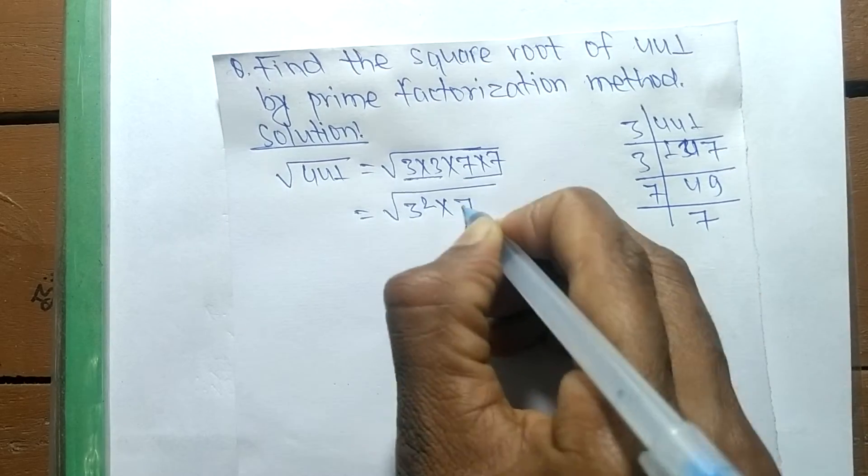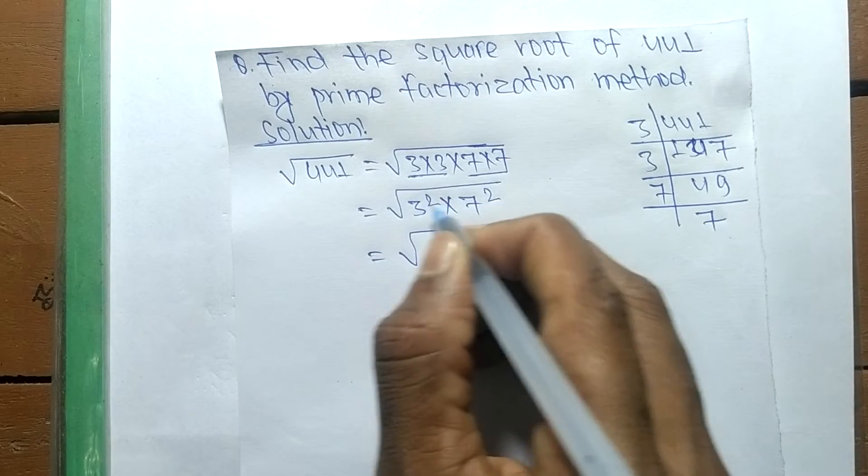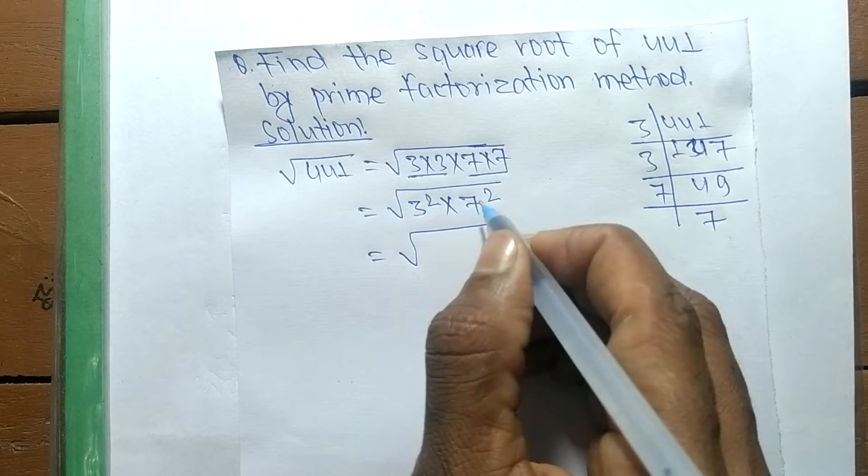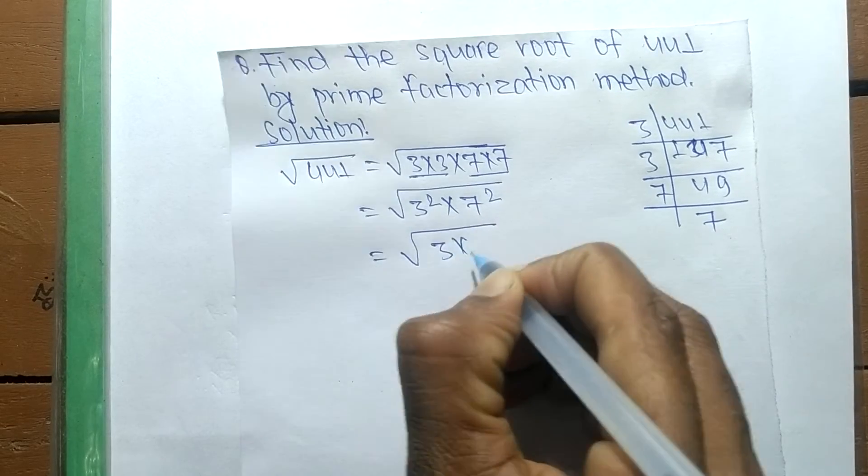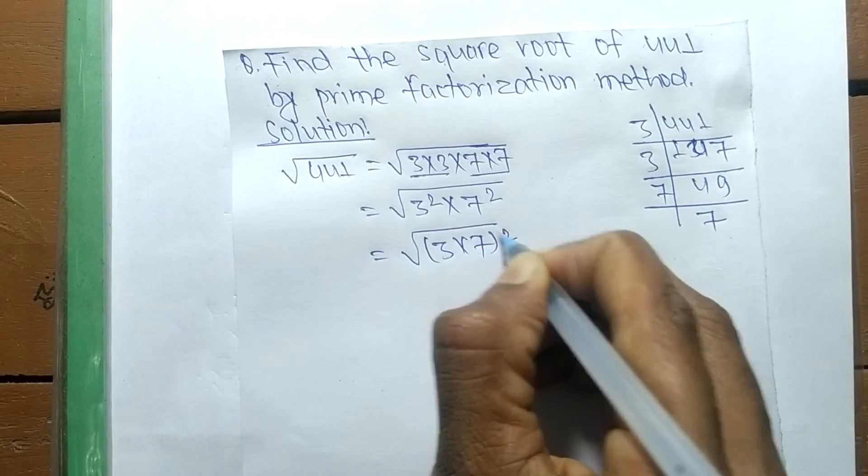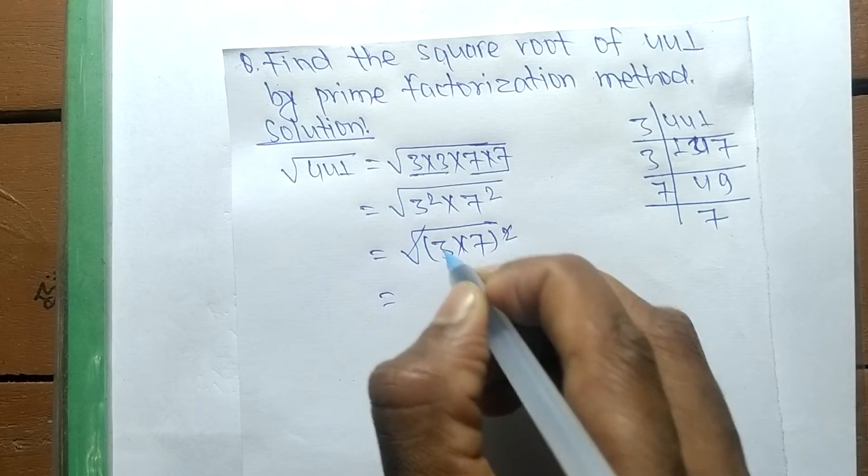And 7 into 7 is 7 squared. Since square is present in both numbers, we take square as common and it becomes 3 into 7 whole squared. The square and square root cancel, and the numbers come out to 3 into 7.